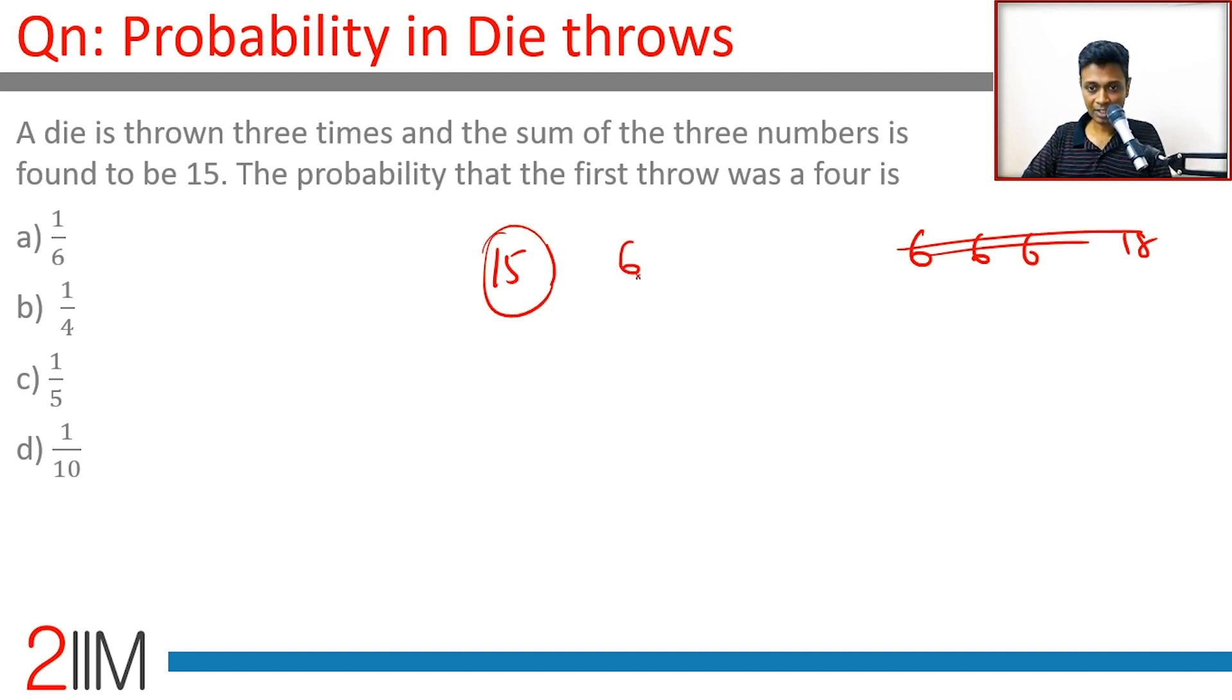So it could be 6, 6, 3 or 6, 5, 4. Nothing else is possible. If you have a 6 on one of the throws and the maximum being 6, then the other two should add up to 9. 6 plus 9 is 15. That could be 6 and 3 or 5 and 4.